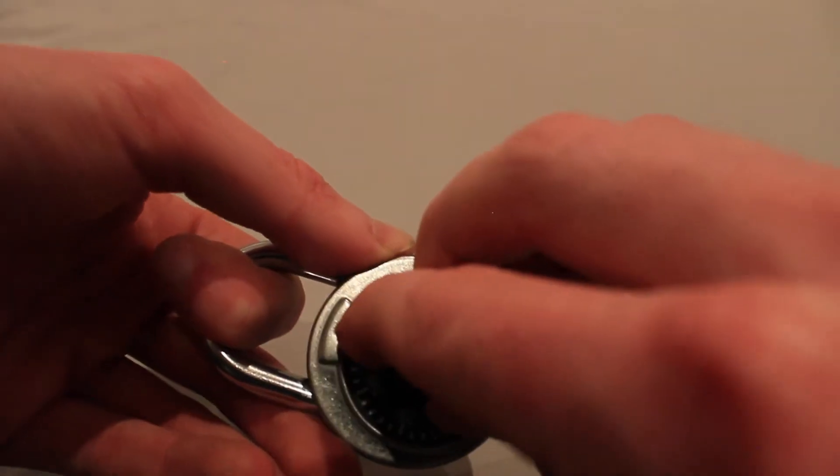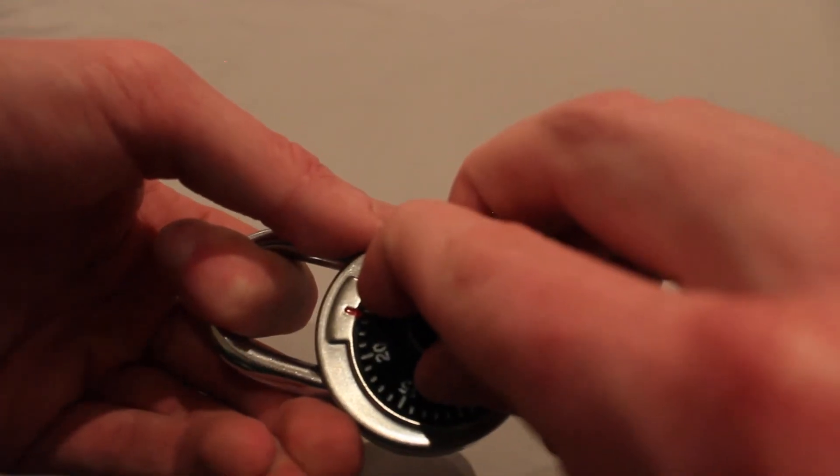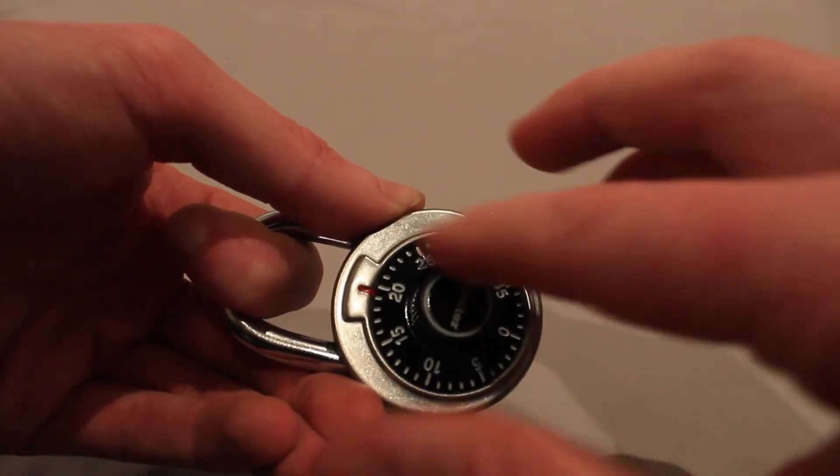Now with pressure applied to the shackle rotate the dial clockwise. The dial will be stiff until the first key is found. At this point the dial will spin freely until it reaches the same key after a full rotation.